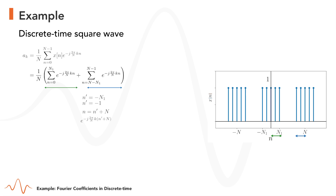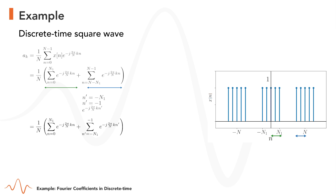If we replace n by N prime plus capital N in e to the power of minus j 2 pi over capital N times K times n, we obtain e to the power of minus j 2 pi over capital N times K times N prime, since the extra factor is always 1. Since N prime is a dummy variable, we can replace it by n and group the two summations to obtain a summation from n equals minus capital N1 until capital N1, which is the expression we intended to show.